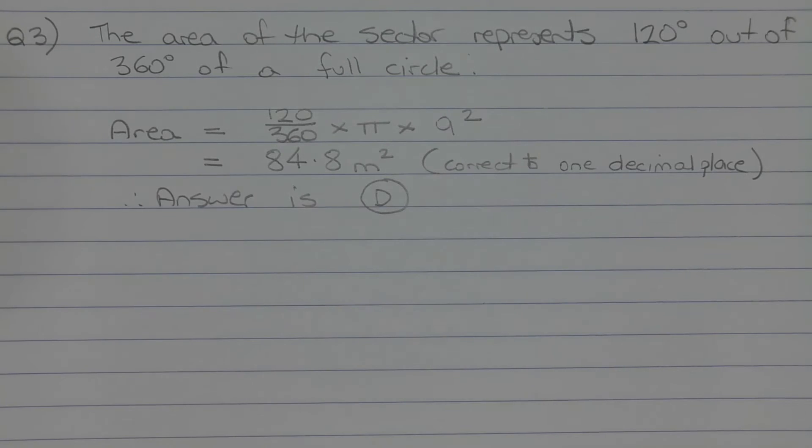So in other words, the area of the sector is a fraction of the area of the full circle, and the fraction is 120 over 360.